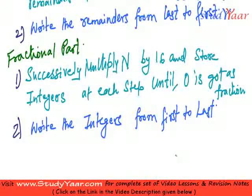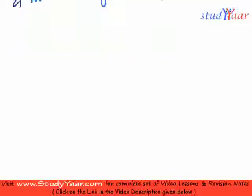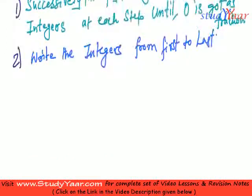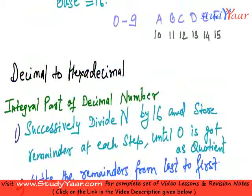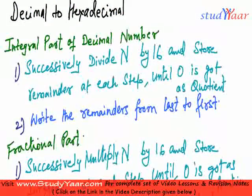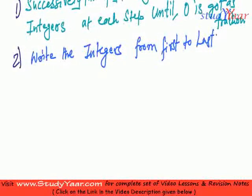For fractional part, I successively multiply by 16. Do it until I get 0 in the fraction. And I write the integer or integral part of the product from first to last. So let's take an example to see how do we convert from decimal to hexadecimal.